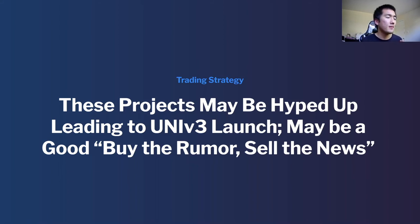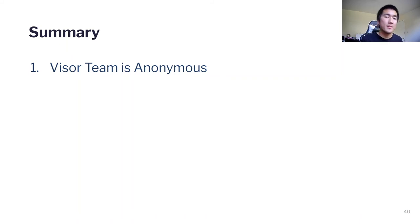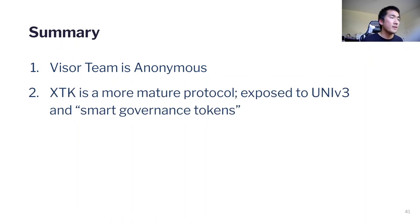The one thing that worries me is that the Visor team is anonymous for a protocol tackling such a big and complex topic. I wish I could audit their past work and see who they are — with anonymous teams, it's hard to audit their actual skills. In terms of comparing XToken and Visor, XToken is a more mature protocol with built-out smart governance token products, and now they're creating a new product for Uniswap V3.